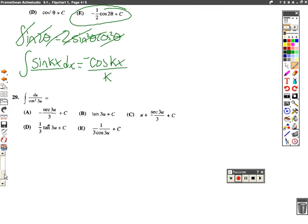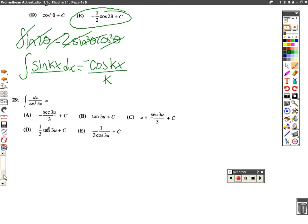All right, number 29. We have du over cosine squared of 3u. At this point, hopefully we have done enough that you can recognize that this is the integral of 1 over cosine, which is actually just the secant squared of 3u.